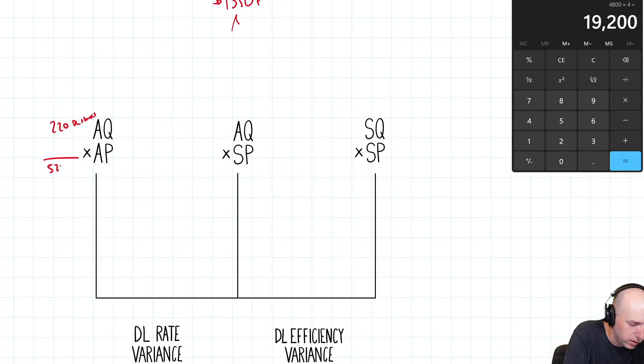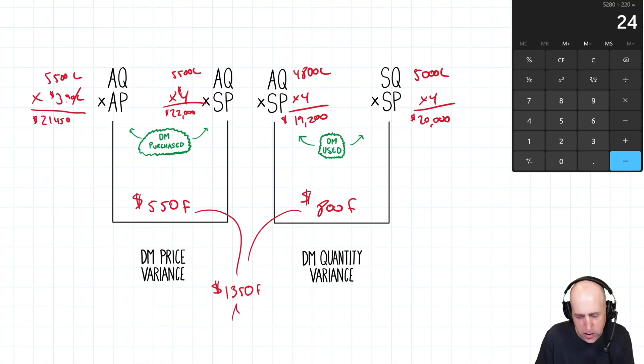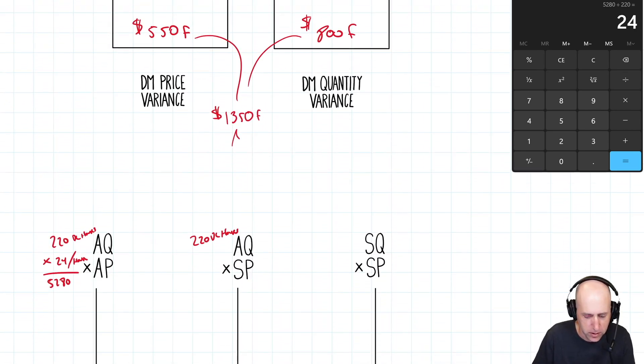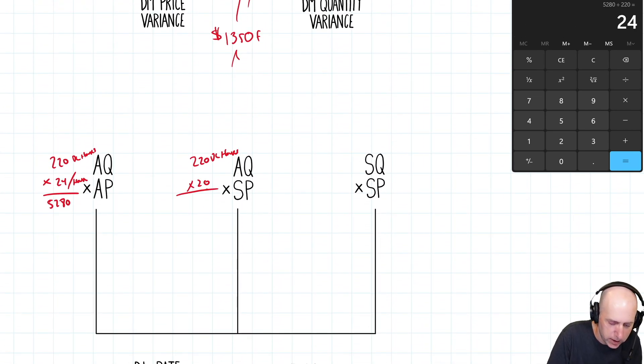We can work backwards to a wage rate here. $5,280 divided by 220 hours. I paid my workers $24 per hour. That was the wage rate. AQ remains 220. Standard price, that's going to come from the standards. I'm supposed to be paying $20 an hour according to the labor in my standards. So 220 times 20 is 4,400.